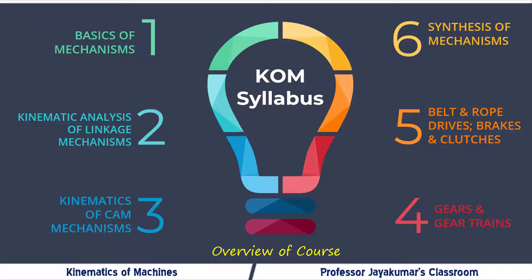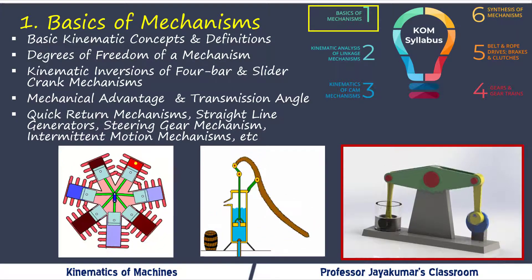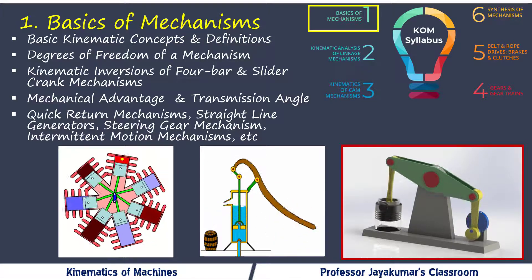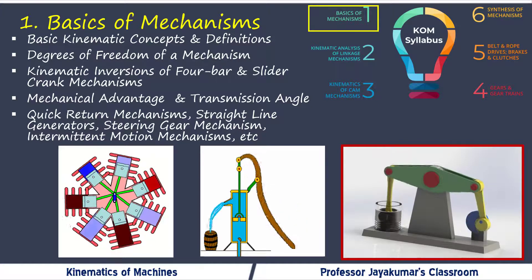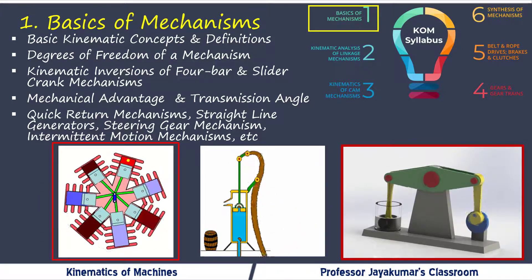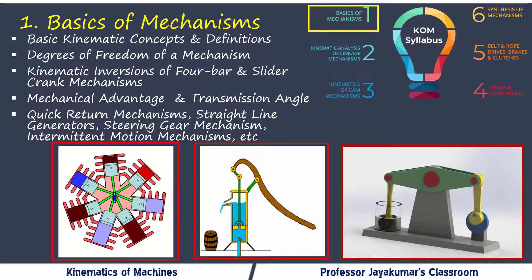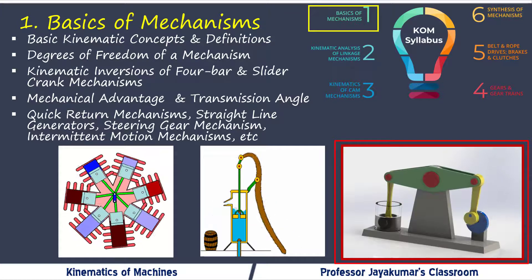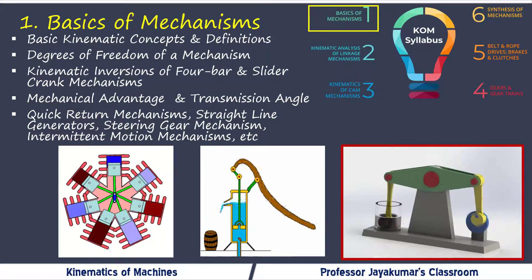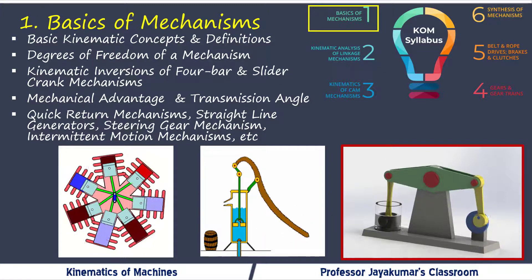Starting with module 1, basic kinematic concepts and definitions will be given. For a given mechanism, how to determine degrees of freedom will be covered. Then the concept of kinematic inversions of four-bar and slider-crank mechanisms will be dealt with. For example, a rotary engine and a hand pump are kinematic inversions of a slider-crank mechanism, and a beam engine is a kinematic inversion of a four-bar mechanism. Other concepts such as mechanical advantage, transmission angle, and various mechanisms such as quick-return mechanisms, straight-line generators, and intermittent motion mechanisms are also covered.